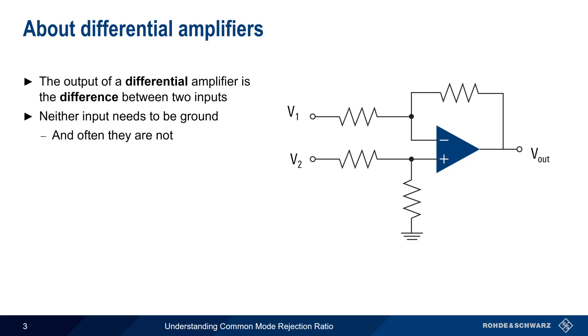and in most cases they are not. The output voltage, Vout, is the difference between the input voltages multiplied by the amplifier's so-called differential gain.